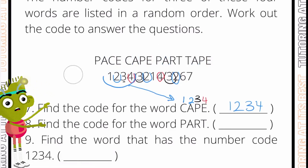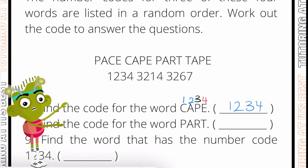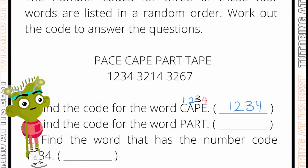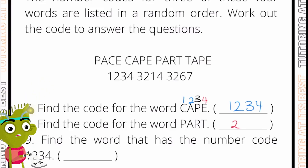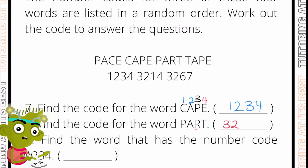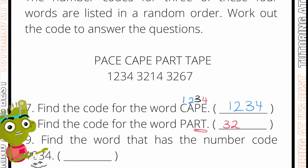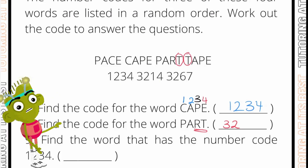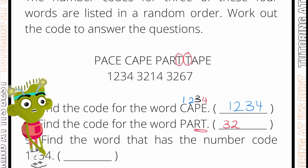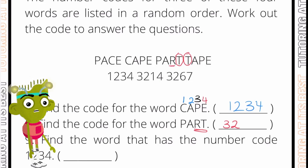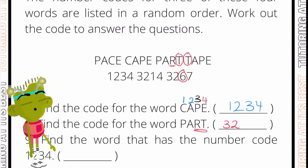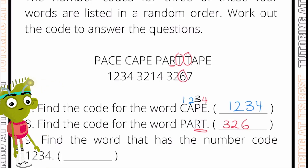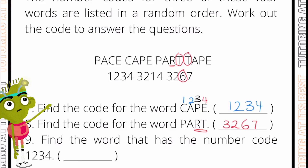This will help us calculate the remaining questions. For 'part', we know A equals 2 and P equals 3, so we have 3 and 2. Now we need to work out R and T. Looking at R, it is in position three, and the only number in position three that doesn't repeat is 6 — so R equals 6. That means T will be 7. The answer for 'part' is 3267, worked out through deduction.